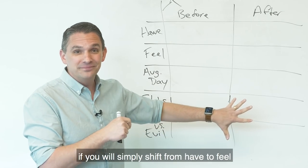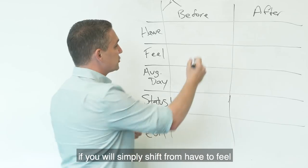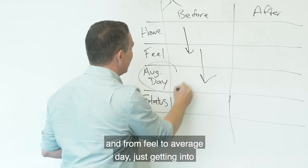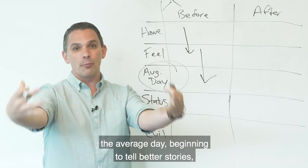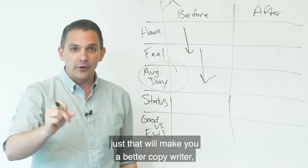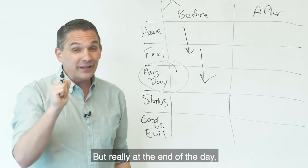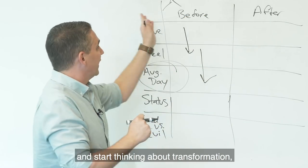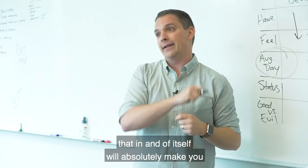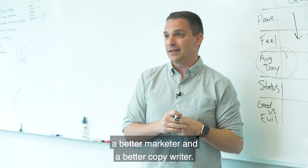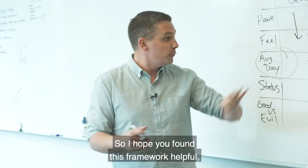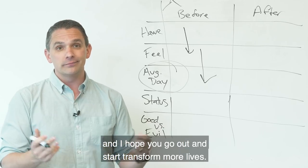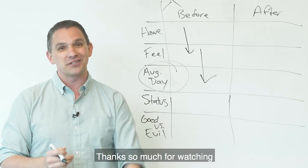Now, whether you get all the way down here, if you will simply shift from have to feel and from feel to average day, just getting into the average day, beginning to tell better stories, just that will make you a better copywriter, will make you a better marketer. But really, at the end of the day, if all you learn to do is to just stop talking about your product and start speaking about transformation, that in and of itself will absolutely make you a better marketer and a better copywriter. So I hope you found this framework helpful. I hope you use it with your team and hope you go out and start transforming more lives. Thanks so much for watching. I'll see you in the next one.